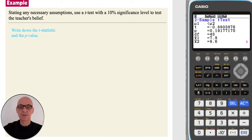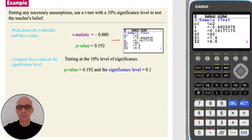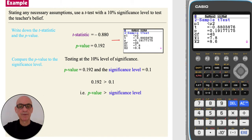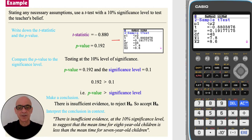Press Execute to perform the test. Write down the value of the test statistic and the p-value, correct to three significant figures. Comparing the p-value to the significance level of 10%, or 0.1: since 0.192 is greater than 0.1 — i.e., as the p-value is greater than the significance level — we conclude there is insufficient evidence to reject the null hypothesis H0, so we accept it. There is insufficient evidence at the 10% significance level to suggest that the mean time for the eight-year-old children is less than the mean time for the seven-year-old children.